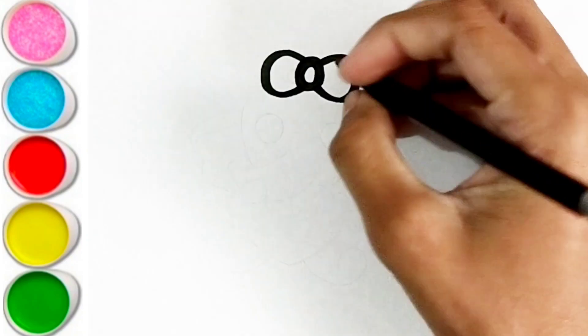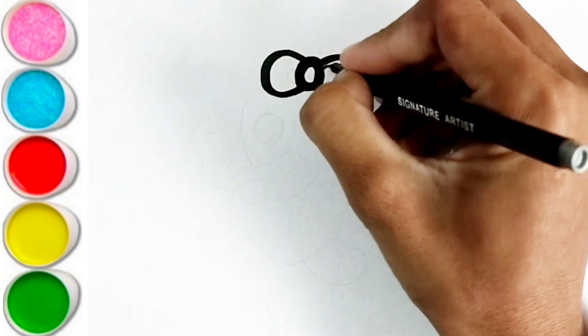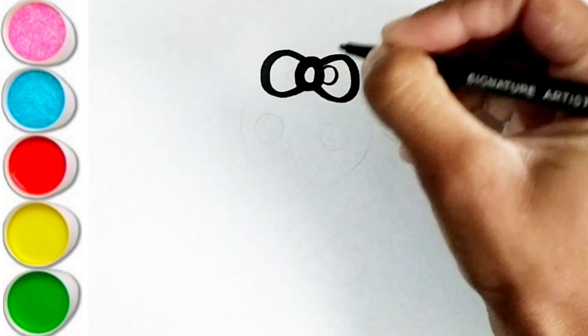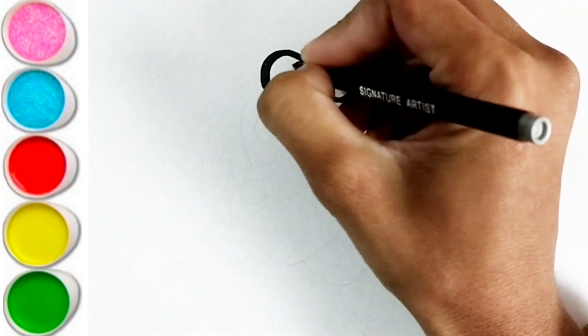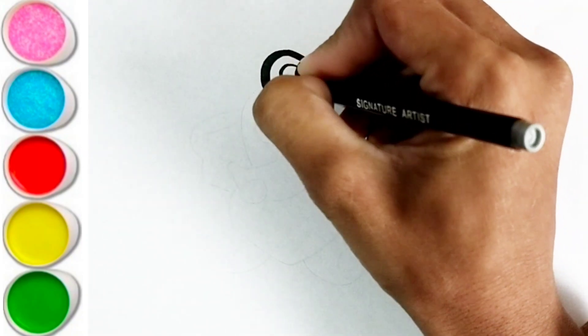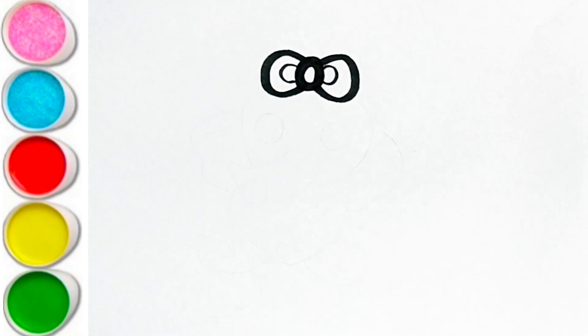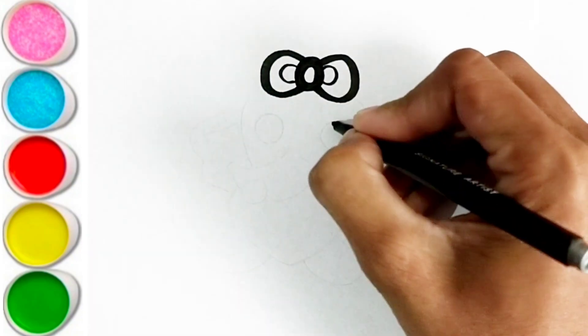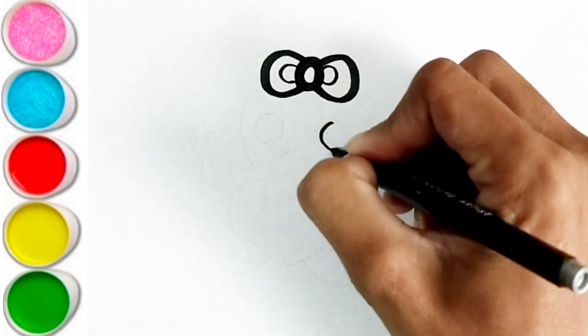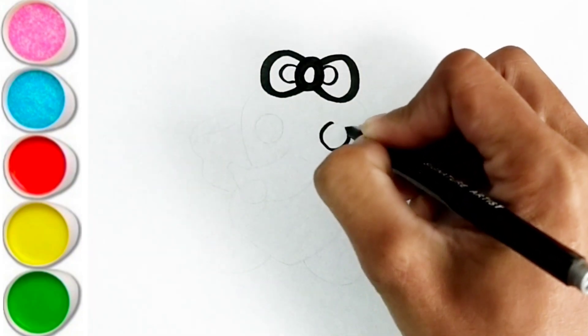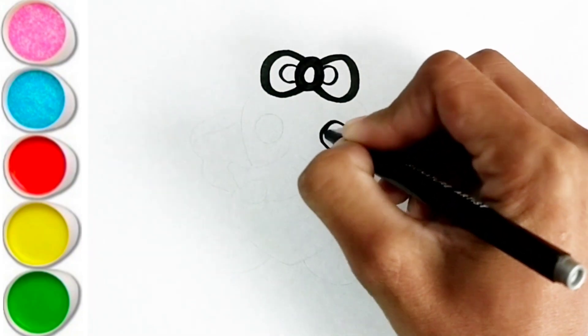E is for elephant. E, e, elephant. F is for frog. F, f, frog. G is for goat. G, g, goat.